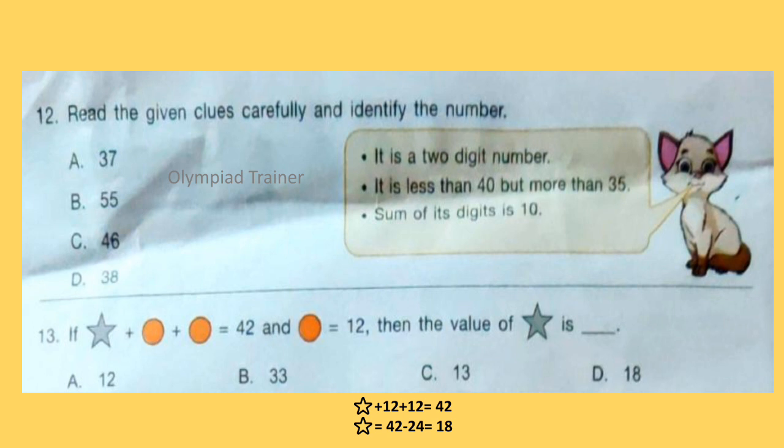Question 12: Read the given clues carefully and identify the number. It is a 2 digit number. It is less than 40 but more than 35 and sum of its digits is 10. Answer is Option A, 37.